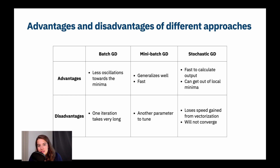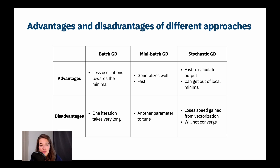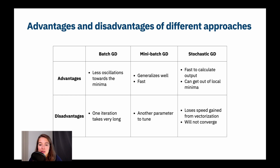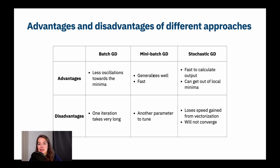Mini-batch gradient descent is like the best of both worlds. You oscillate less than stochastic gradient descent toward the minimum. You calculate outputs faster because you're not giving all examples, just a subset. And it generalizes really well — whereas batch gradient descent might overfit, mini-batch gradient descent does not overfit most of the time.